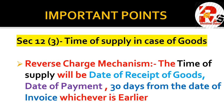Section 12 subsection 3 covers the Reverse Charge Mechanism in case of goods. Here, the time of supply will be the date of receipt of goods, date of payment, or 30 days from the date of invoice, whichever is earlier. These are the two sections - Section 12(2) and Section 12(3) - that apply in case of goods.